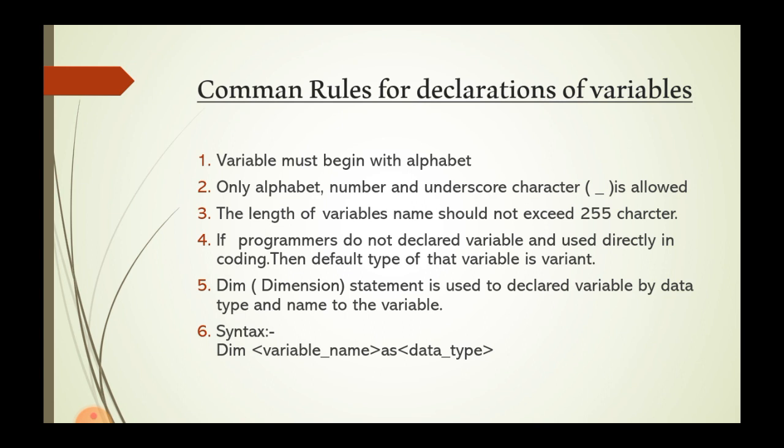Third, the length of a variable name should not exceed 55 characters. If a programmer does not declare a variable and uses it directly in code, the default type of that variable is Variant. The Dim statement — short for Dimension — is used to declare variables by data type and name.